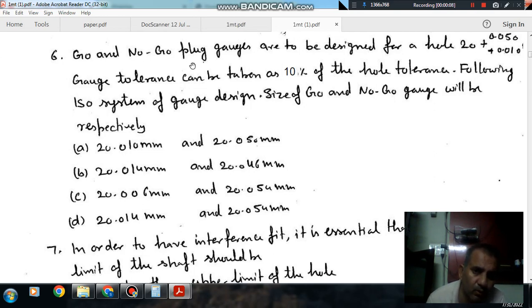Question number 6: Go and No-Go plug gauges are to be designed for a hole 20 plus 0.050 plus 0.010. The gauge tolerance can be taken as 10% of the hole tolerance.